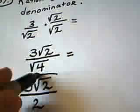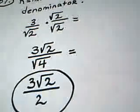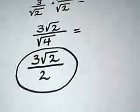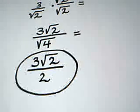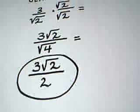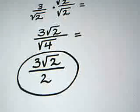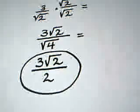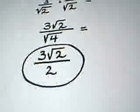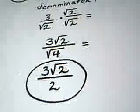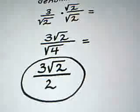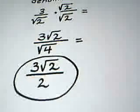This is my final correct answer to this problem: 3 times the square root of 2, all divided by 2. The denominator is rationalized because we no longer have a radical in the denominator.